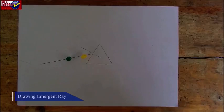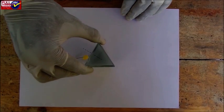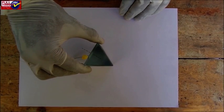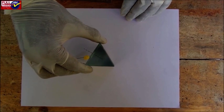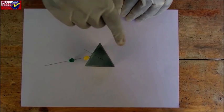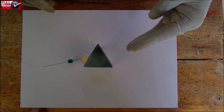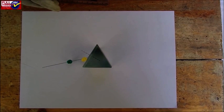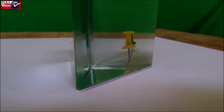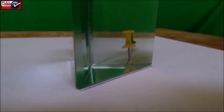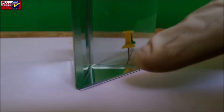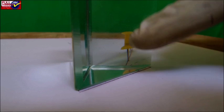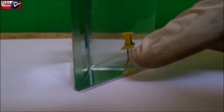Drawing Emergent Ray: Now place the prism so that one of its refracting surfaces like AP of the prism is in line with XY and trace the boundary ABC. Try to see the image of pins P and Q through side AC of the prism such that the tips of the pins P and Q are on the same straight line.